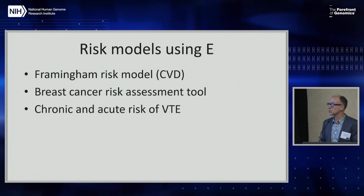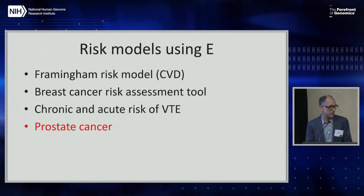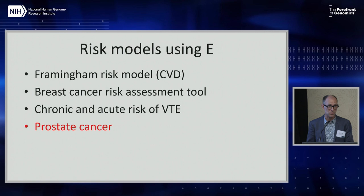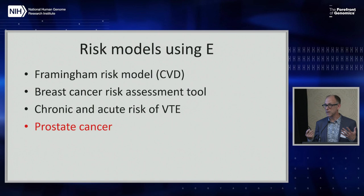I also want to highlight an example of a disease for which, despite a lot of effort, we've found really little in terms of environmental exposures that we can use in risk models. For prostate cancer, we're left with age, family history, and ethnicity — that's pretty much it, despite many efforts. So if you're thinking about what genetics can add, in the context of prostate cancer prediction it adds an awful lot, because we're starting from a pretty poor baseline.